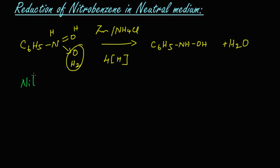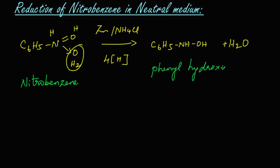Let's write the names for these structures. Nitrobenzene reacts with zinc and ammonium chloride to give phenyl hydroxylamine. If we change the catalyst, the reaction takes place in a different way — let's learn that reaction.